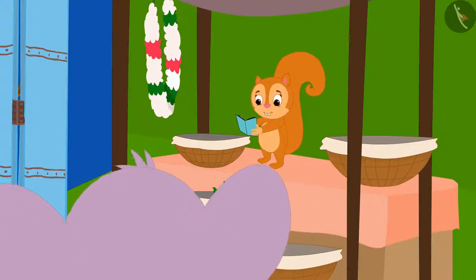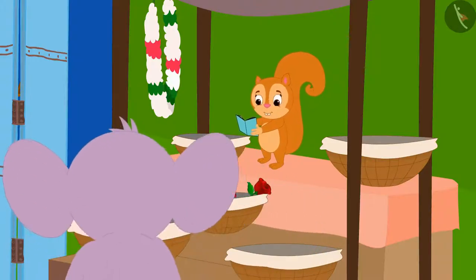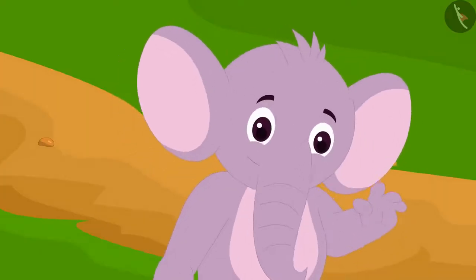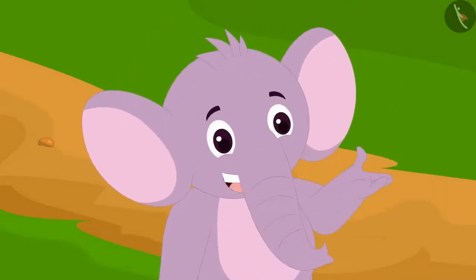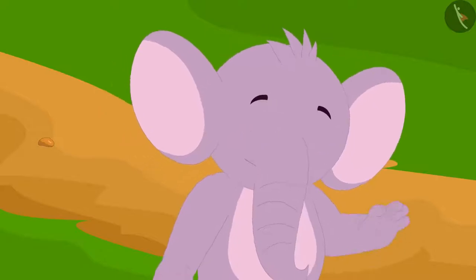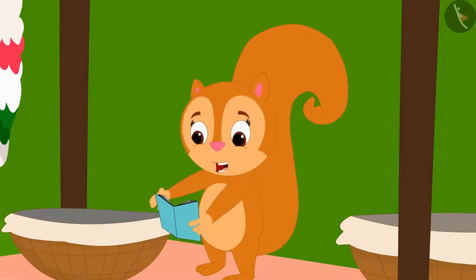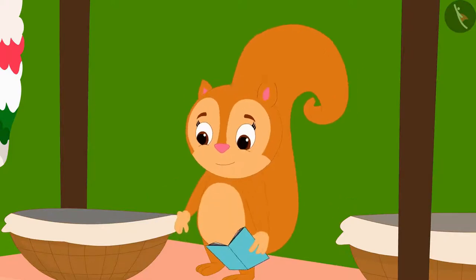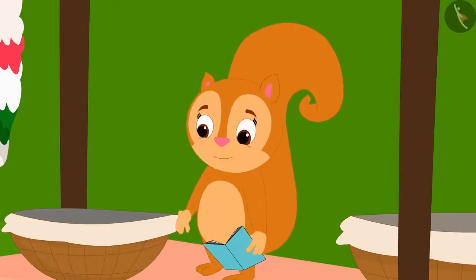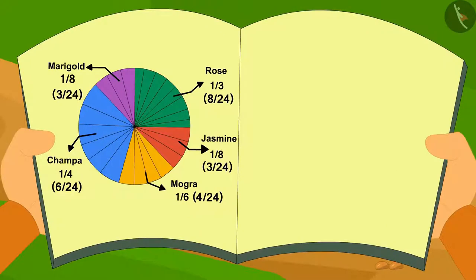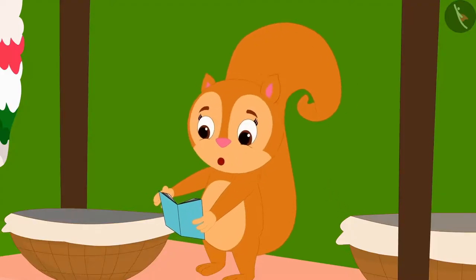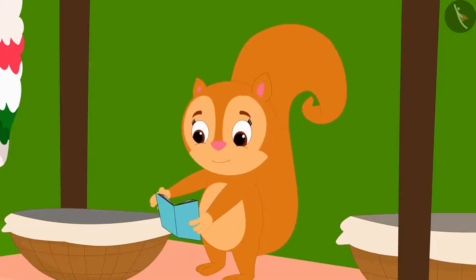Just then, Appu came to Chanda's shop. Chanda, what is this pie chart you made? This shows the popularity of my flowers. I have made this pie chart from the information about how many flowers I have used in the various orders. According to this, the largest part is the Champa flowers. It means Champa flowers are the most popular flowers.